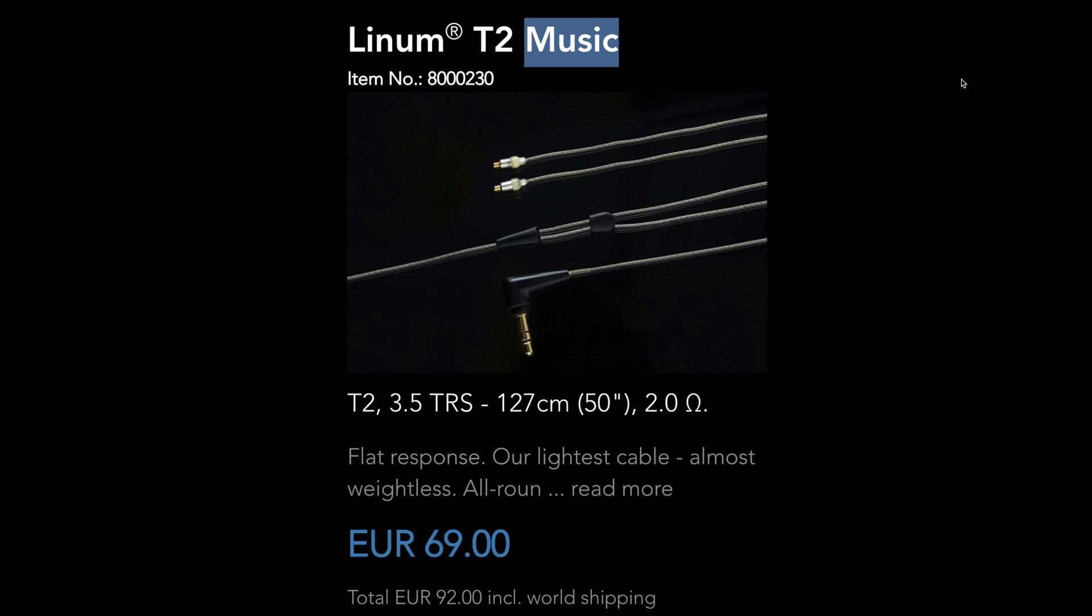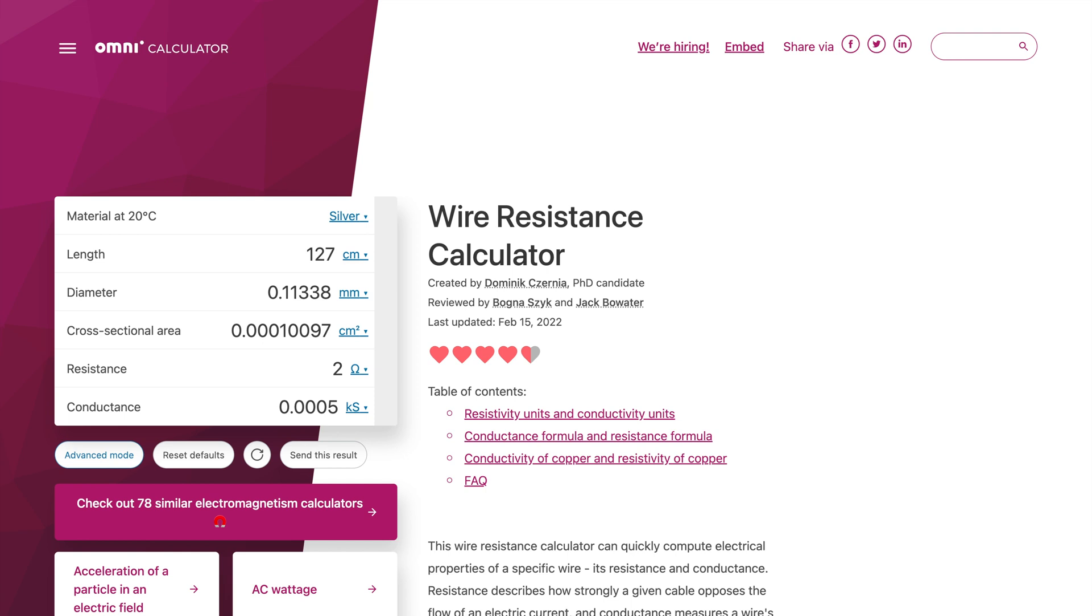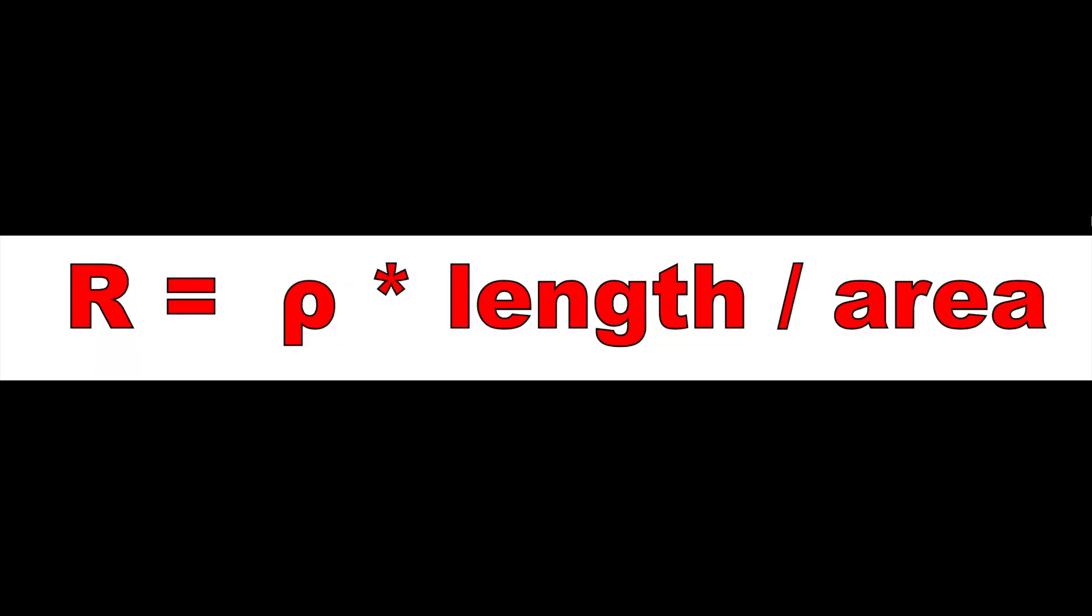127 centimeters and 2 ohms gets us a width of about 0.11 millimeters. That is extremely thin for a cable. Notice how when we increase diameter, resistance significantly drops. This is because a lower area makes it more difficult for current to flow.